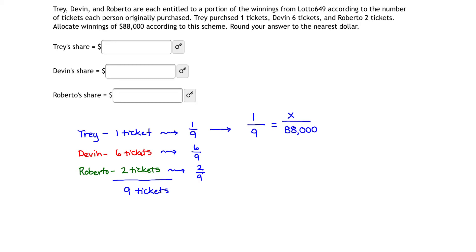So, how do we solve that proportion? Well, we do a quick cross-multiply and divide. So, we have that 88,000 is equivalent to 9X. Dividing both sides by nine tells us that Trey gets 88,000 divided by nine, but we're asked to round to the nearest dollar and that means Trey's winnings out of the 88,000 are going to be $9,778. That represents one-ninth of the total winnings.